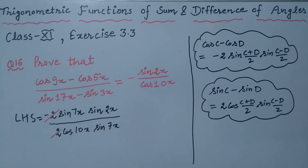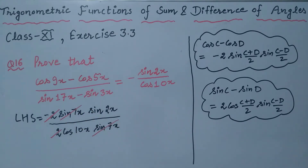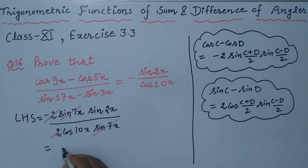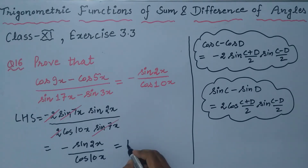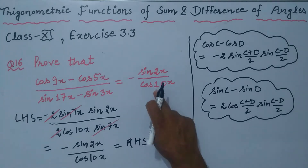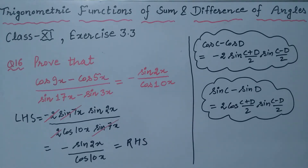The 2's cancel and sin 7x is common and cancels. What we are left with is minus sin 2x divided by cos 10x, which is the right hand side of the question. Hence proved.